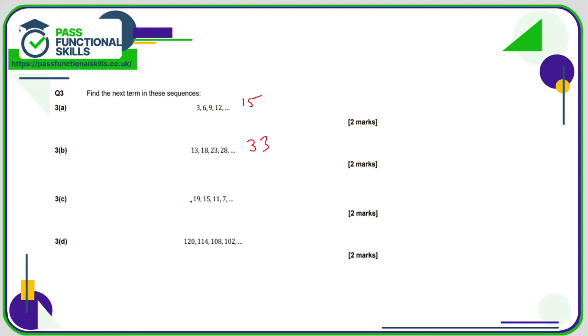19, 15, 11, 7, we're subtracting 4, 7 take away 4 is 3. 120, 114, 108, 102, we're subtracting 6, 102 minus 6 is 96.